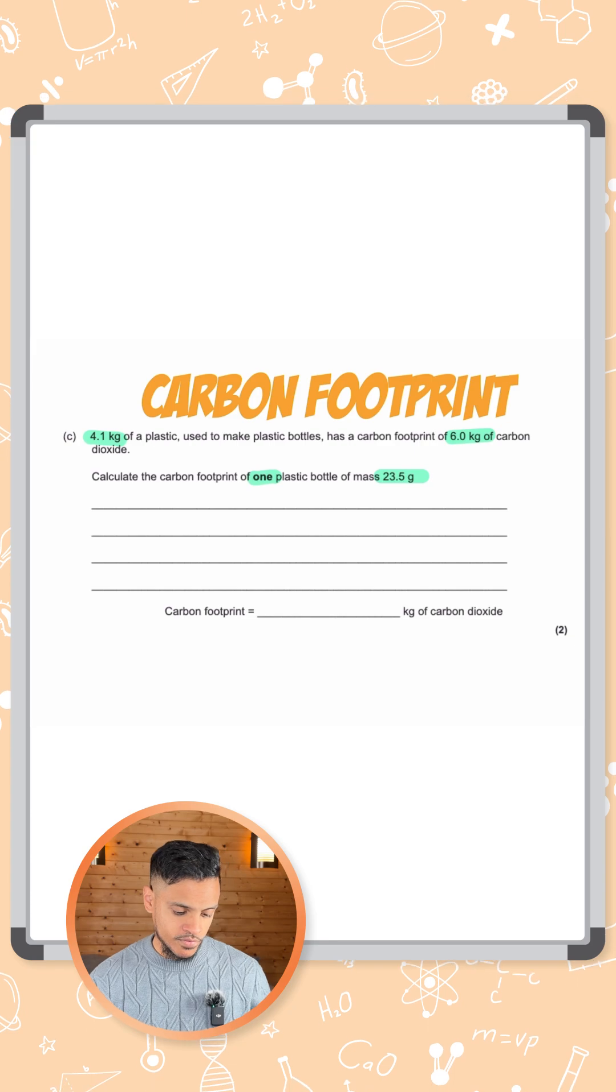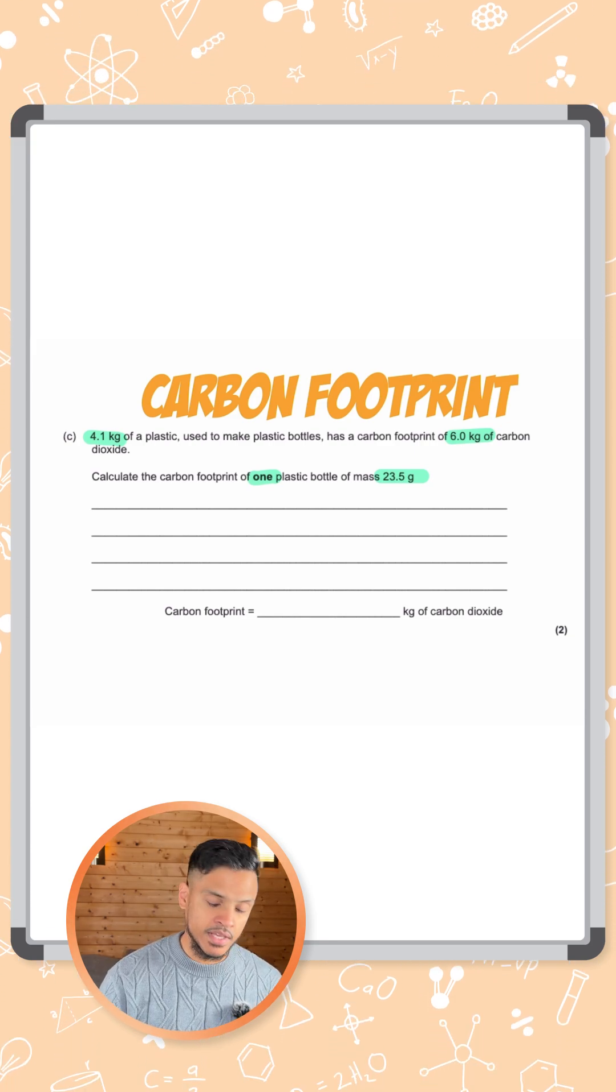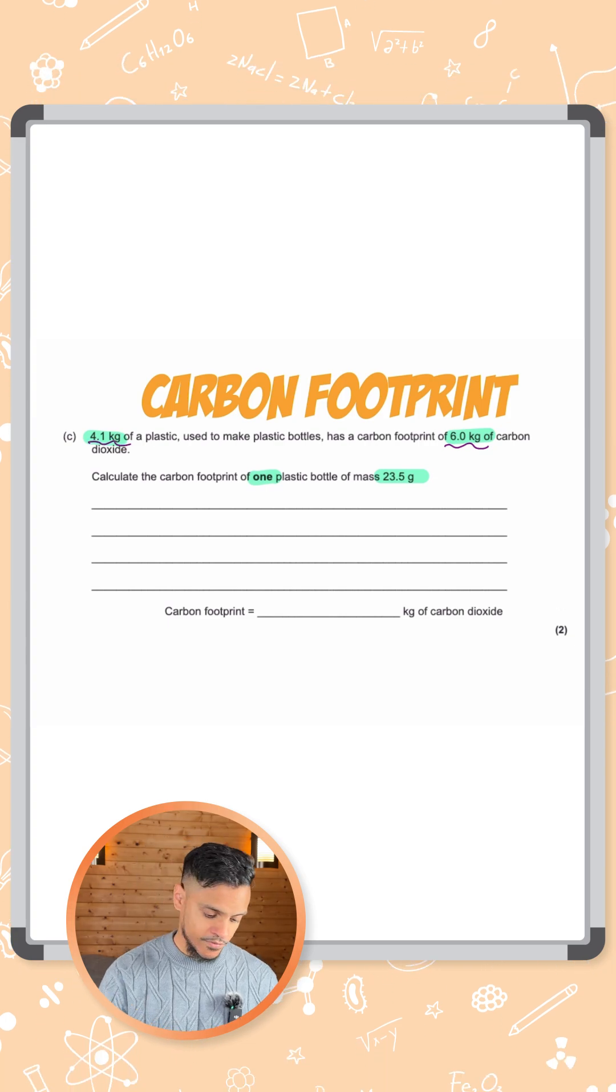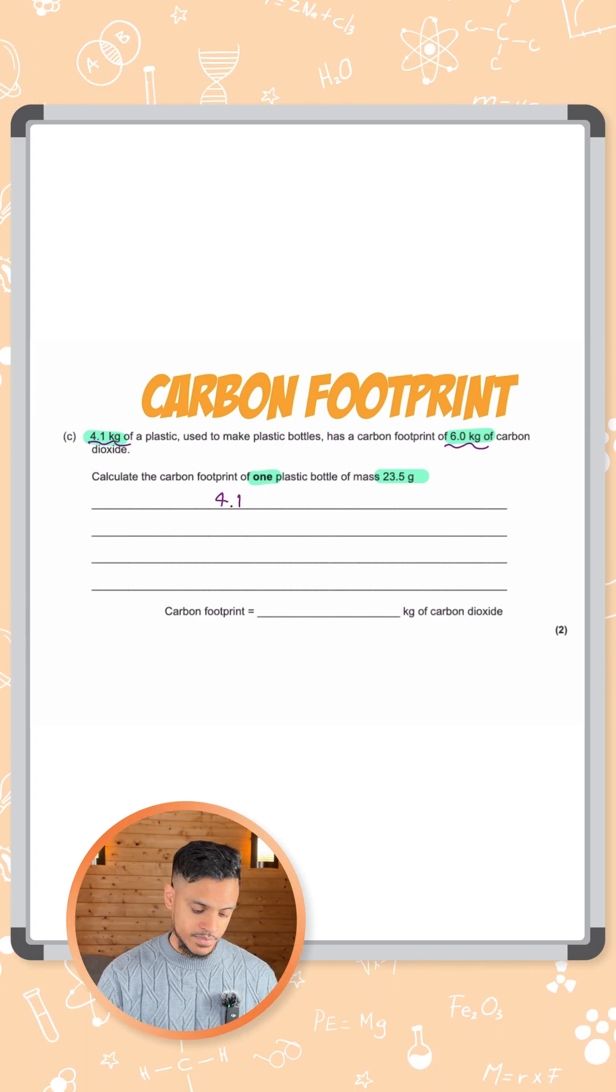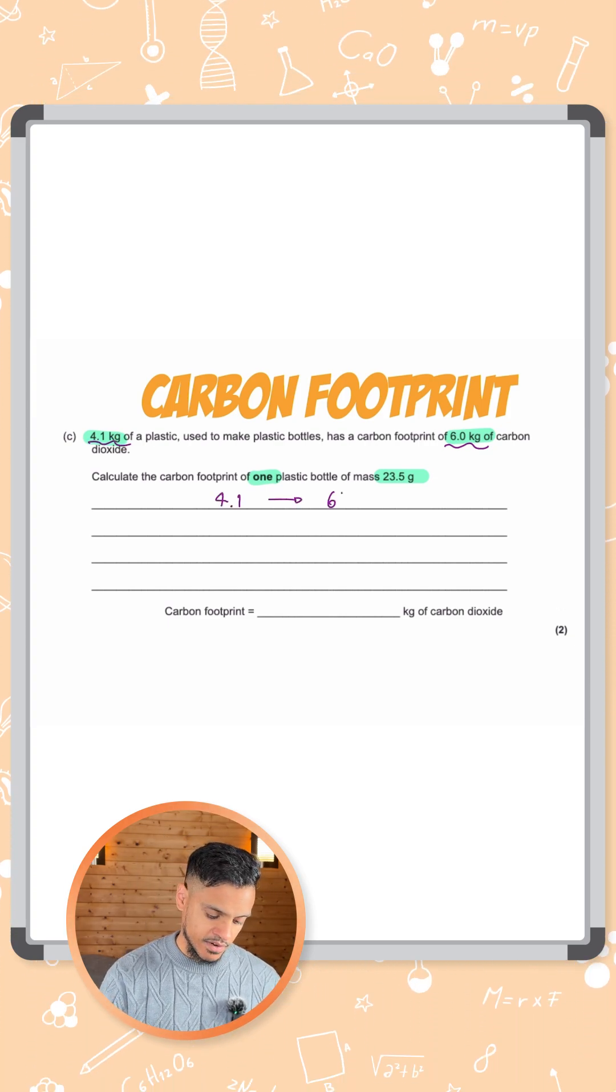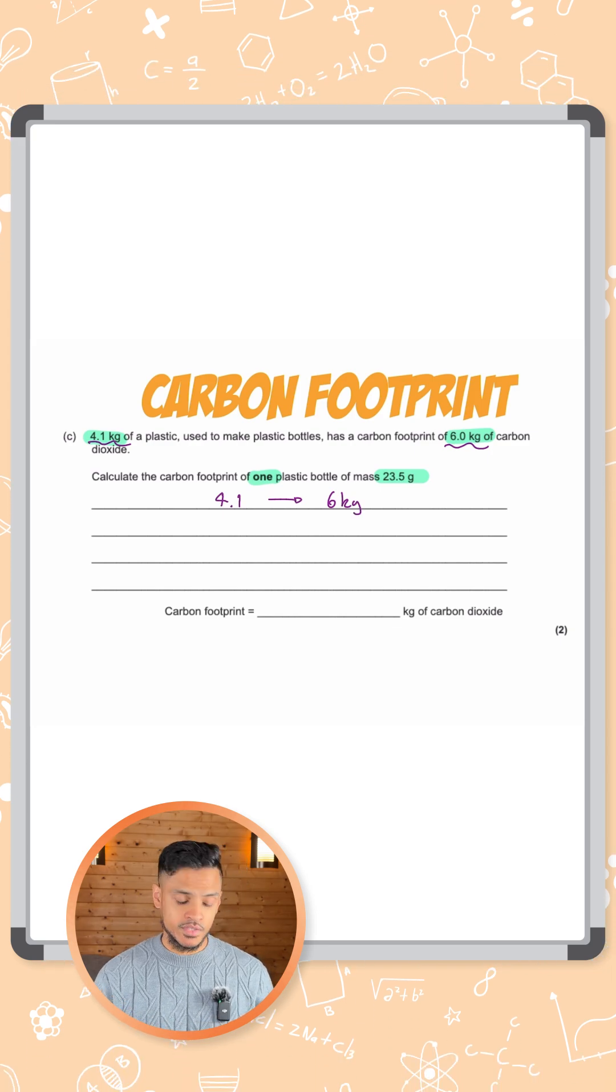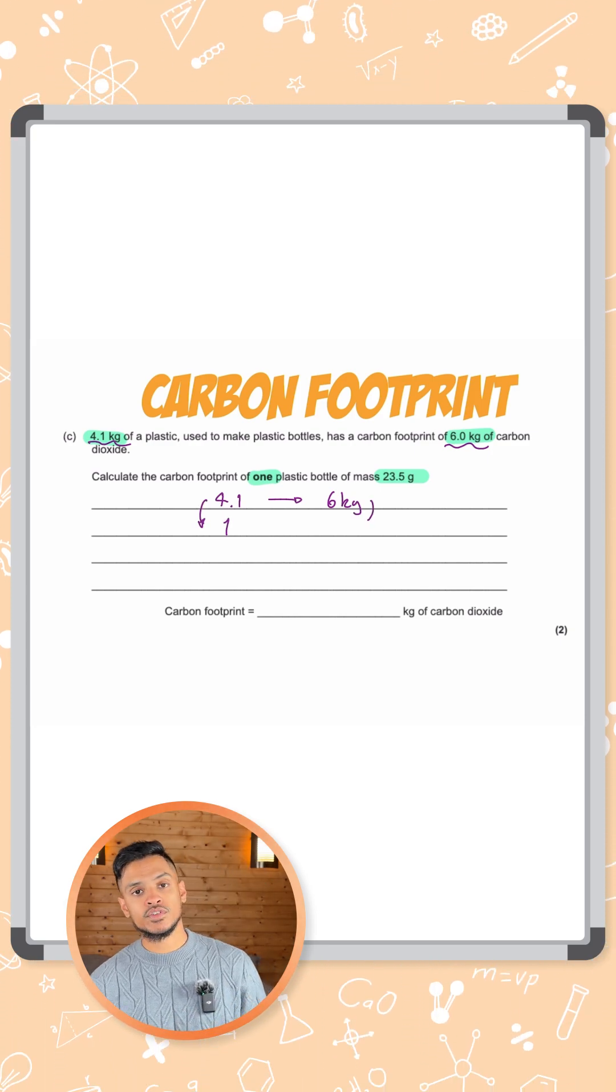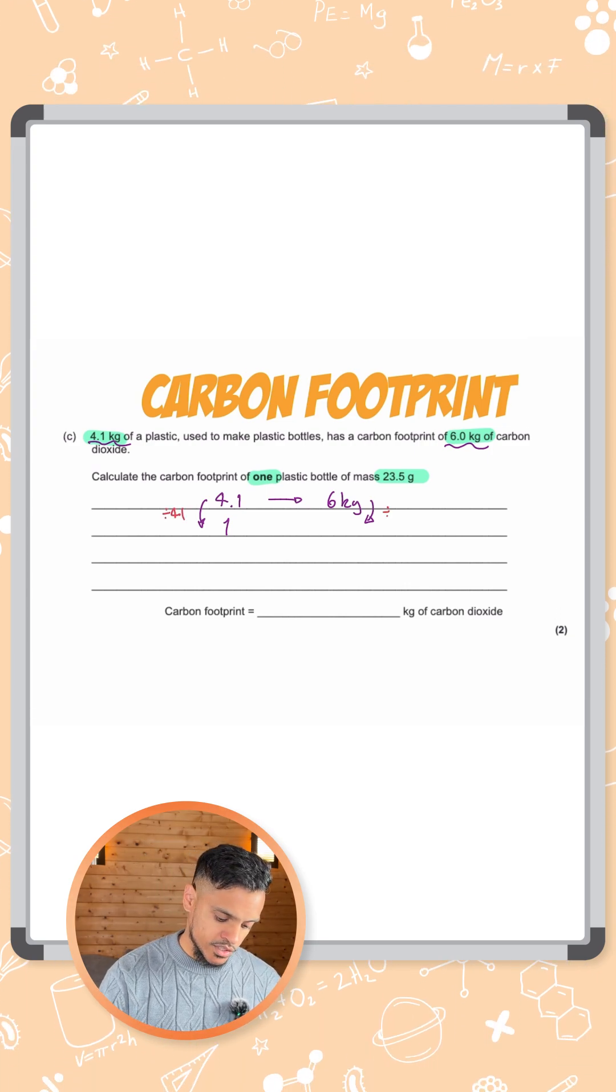What we want to do first is work out how many kilograms of carbon dioxide is released for 1 kilogram of plastic. 4.1 kilograms gives you 6 kilograms of carbon dioxide. So to get from 4.1 to 1, you need to divide by 4.1, and we need to do the same on this side.